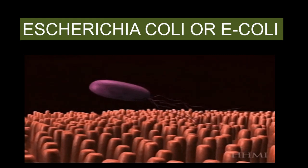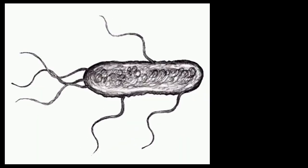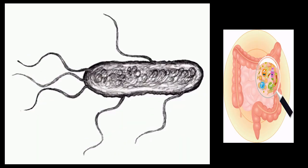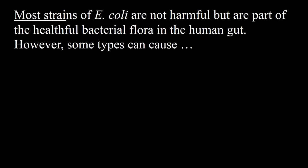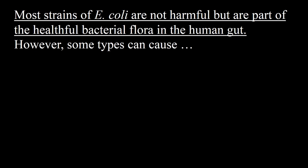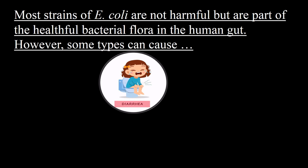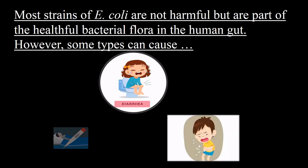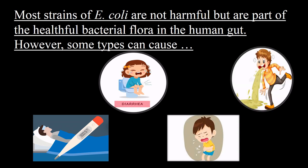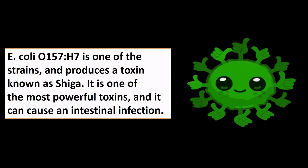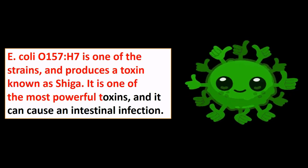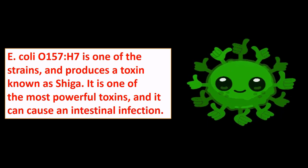E. coli is also known as gut bacteria or gut bomb. Most strains of E. coli are not harmful but are part of the helpful bacterial flora in the human gut. However, some types can cause illness in humans, including diarrhea, abdominal pain, fever, and sometimes vomiting. E. coli O157:H7 is one of the strains that produces a toxin known as Shiga toxin. It is one of the most powerful toxins and it can cause an intestinal infection.